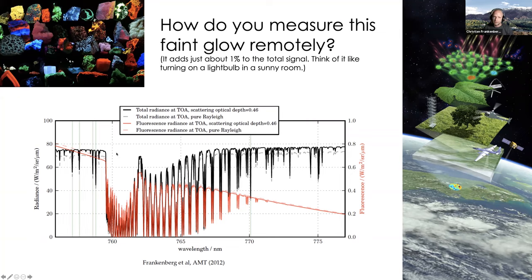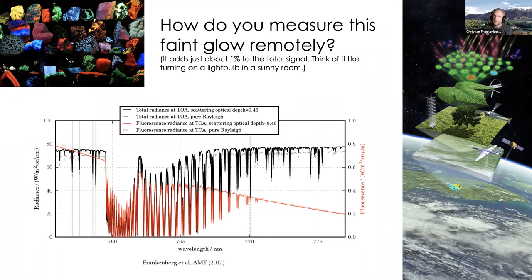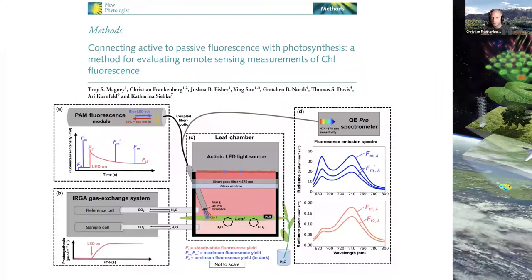From space, we need a different kind of curtain since we can't put a bandpass filter above the atmosphere. The Fraunhofer lines serve as our 'gray room' in spectral space. We fit the infilling of these lines with retrieval routines across multiple Fraunhofer lines to determine the quantity of fluorescence emission. This signal is scale independent and additive — less sensitive to scattering effects than reflectance-based indices.